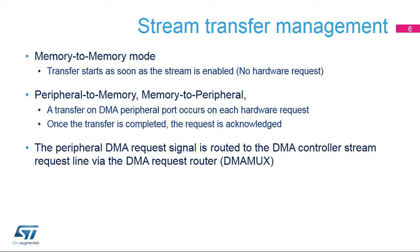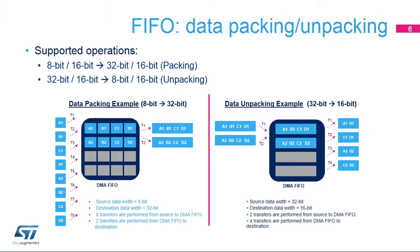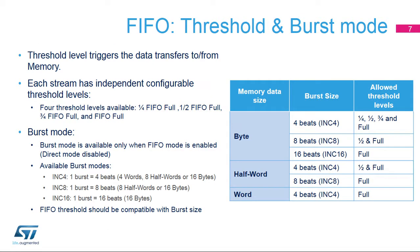When data is transferred to or from a peripheral, the hardware request from the selected peripheral is used to trigger the data transfer on the DMA peripheral port. Once the transfer is completed, the request is acknowledged. When FIFO mode is enabled and direct mode is disabled, the DMA controller manages the data format difference between source and destination, or data packing and unpacking. Thanks to its internal FIFO, the DMA stream can reduce software overhead and the number of transactions over the AHB bus. In single or burst mode, the FIFO threshold level determines when the data in the FIFO should be transferred to and from memory. There are four configurable threshold levels per stream, starting from one-quarter FIFO full to FIFO full.